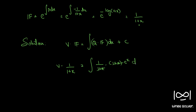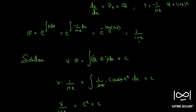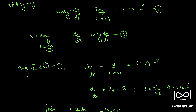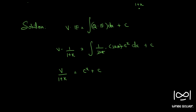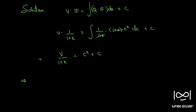(1 + x) and (1 + x) cancel. So we have v by (1 + x) is equal to integral of e^x, which is e^x plus c. Now from equation 2 we have v equal to sin(y), so this becomes sin(y) by (1 + x) is equal to e^x plus c.